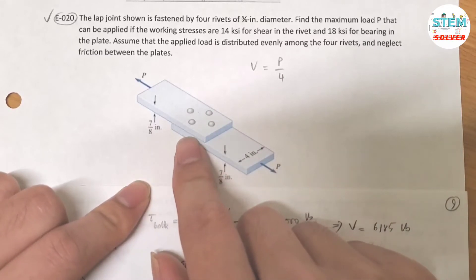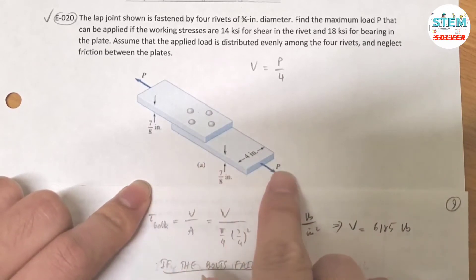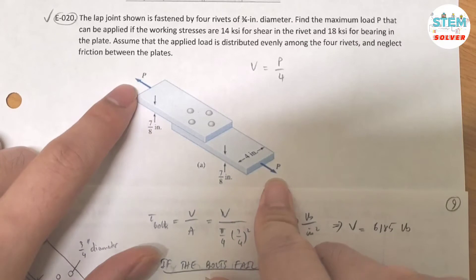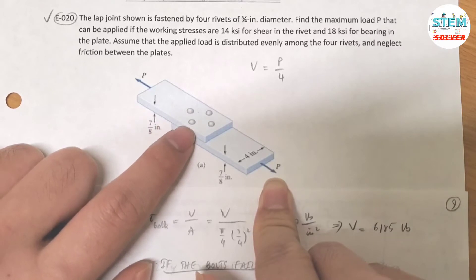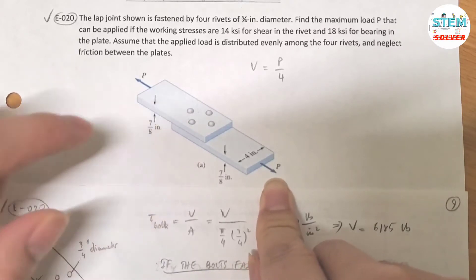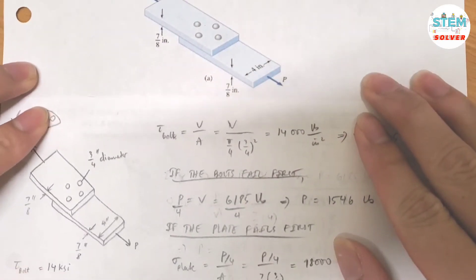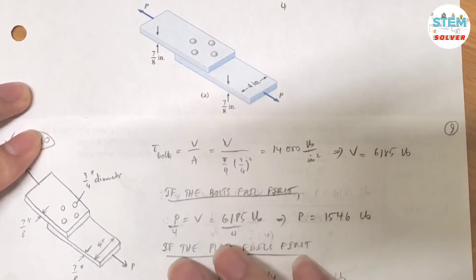So you have to find the maximum load P that can be applied into this lap joint with the conditions of the shear stress and the bearing stress. Let me move this up a little bit.